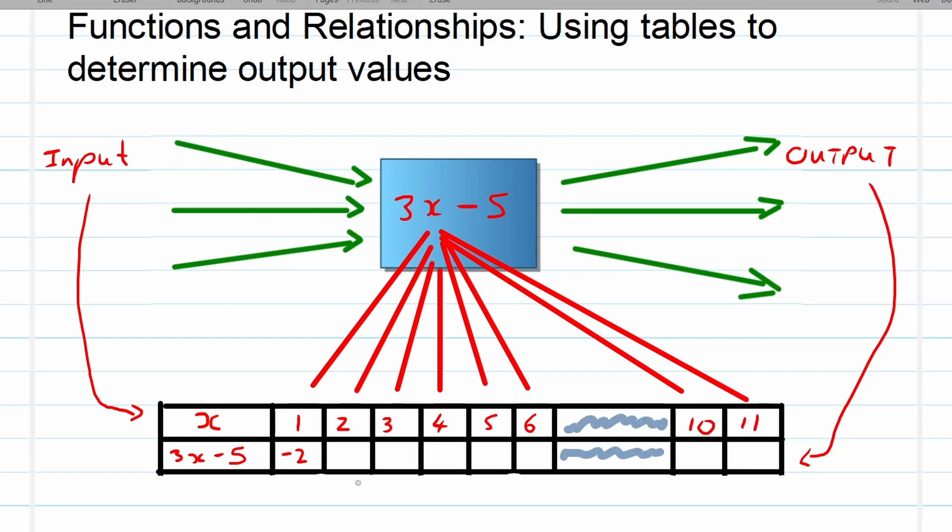If x is 3, then 3 times 3 will give us 9, and 9 minus 5 is equal to 4. You will see this links beautifully with numeric patterns. We've got a constant difference here of 3 units. From negative 2 to 1 is 3 units, you see the 3 in front of the x. Again, 1 to 4 is 3 and you'll see this continues.